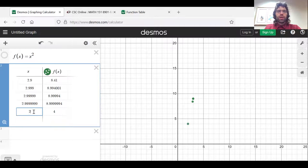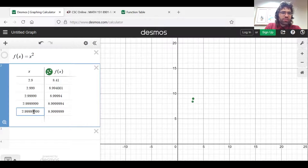So what it looks like from this table is that the closer x is getting to 3, the closer f of x is getting to 9.